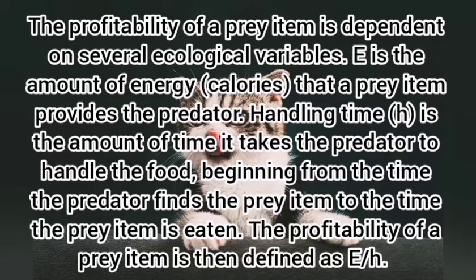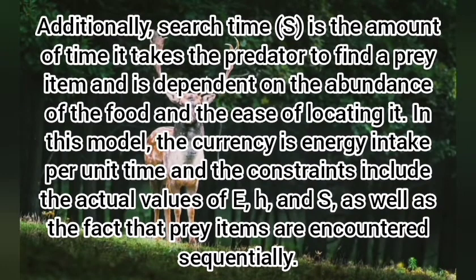The profitability of a prey item depends on several ecological variables. A is the amount of energy, or calories, that a prey item provides the predator. Handling time H is the amount of time it takes the predator to handle the food — from the time the predator finds the prey item to the time the prey item is eaten. The profitability of a prey item is defined as A divided by H. Additionally, search time S is the amount of time it takes the predator to find a prey item, dependent on the abundance of the food and the ease of locating it. In this model, the currency is energy intake per unit time, and the constraints include the actual values of A, H, and S, as well as the fact that prey items are encountered sequentially.